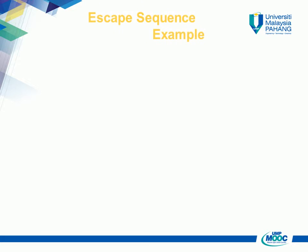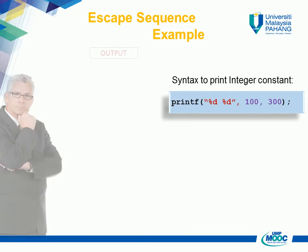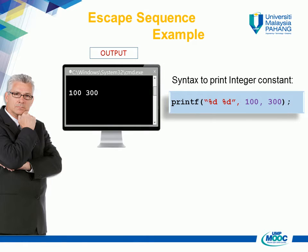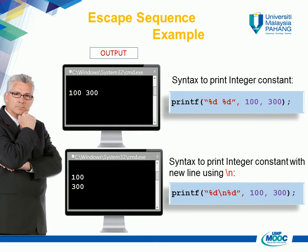Escape Sequence Example — Syntax to print integer constant without new line: printf("%d %d", 100, 300). Output: 100 300. Syntax to print integer constant with new line using \n: printf("%d\n%d", 100, 300). Output: 100 on first line, 300 on second line.